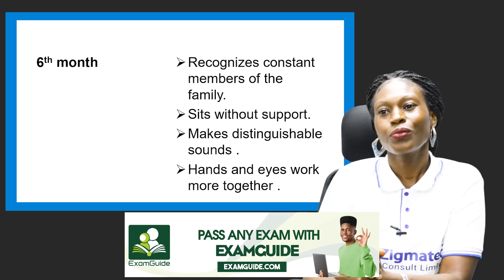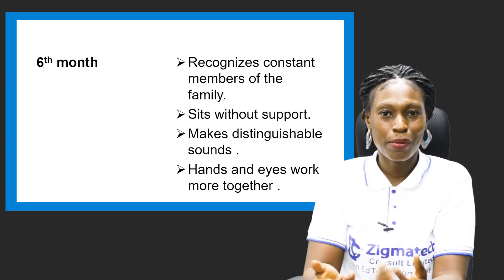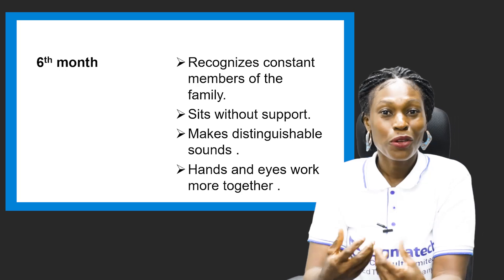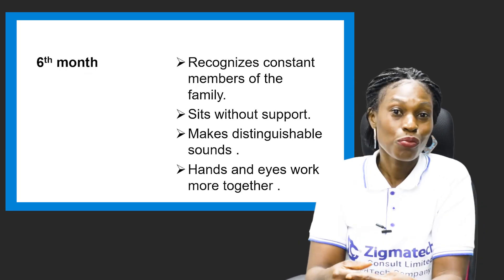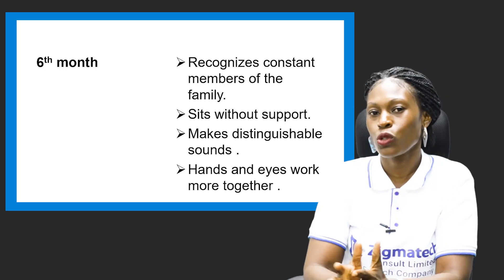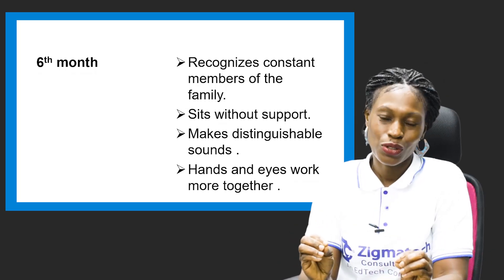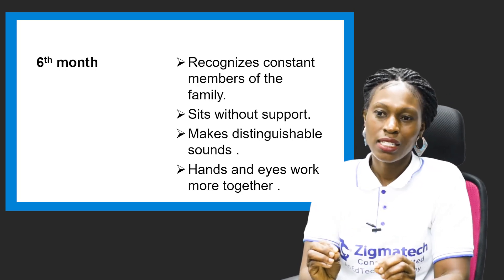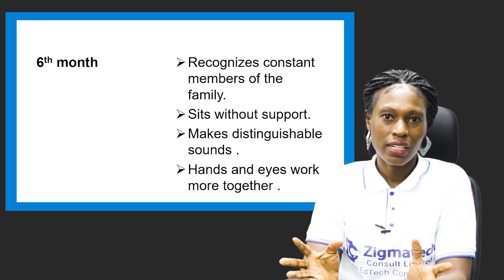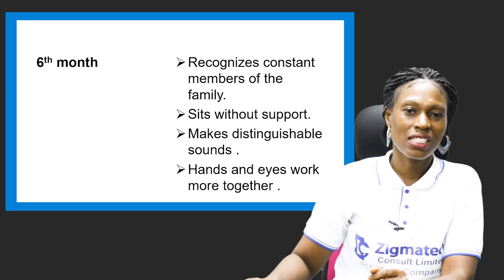At the sixth month, they recognize constant members of the family — the regular members, people they see all the time. They now know mommy, daddy, siblings, or the helpers at home. They can sit without support at this point — you don't have to guide them. They make distinguishable sounds, and hands and eyes work more together. When you say something, they know where to look and find you.